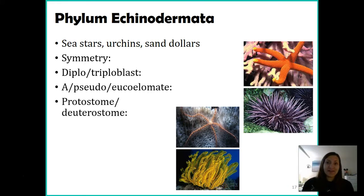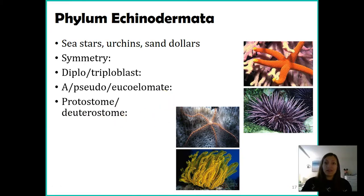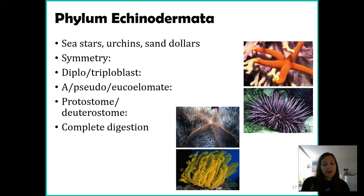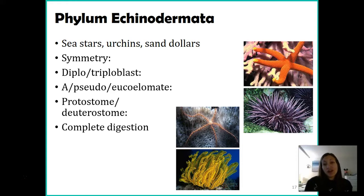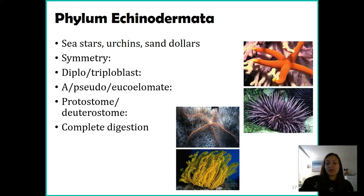We have now entered our deuterostomes. Remember, 'deutero' meaning second and 'stome' referring to mouth — so the mouth formed second, meaning the anus formed first. Despite the fact that they have just a top and a bottom, they do have complete digestion. Their mouth is on one side of the organism and the anus is on the other side, which is different from jellyfish, where one opening served as both mouth and anus.